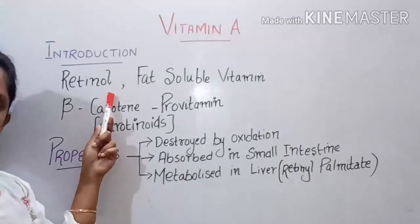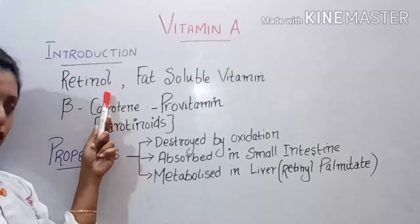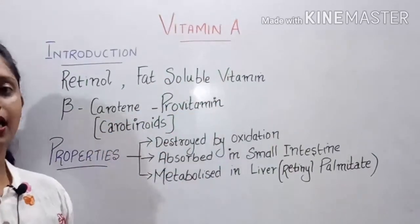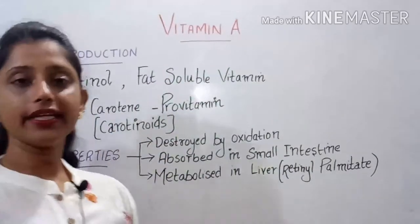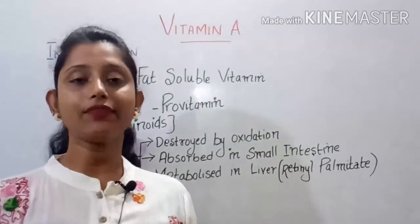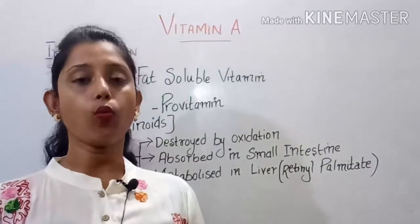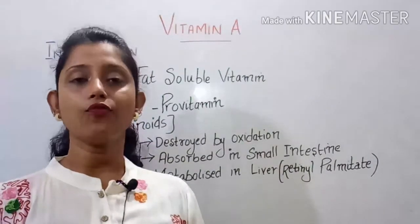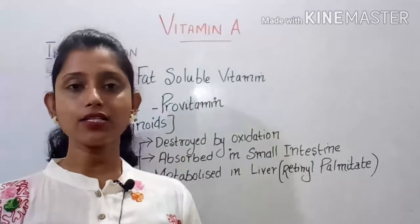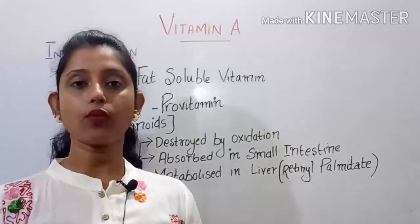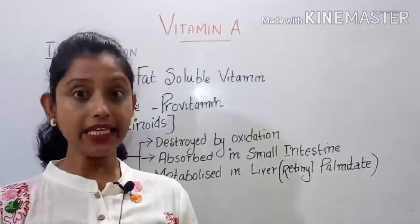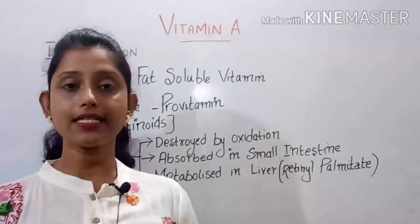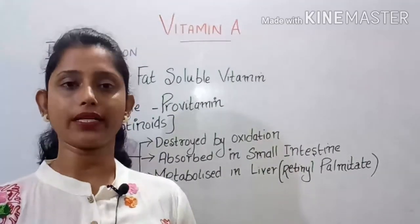Vitamin A is a type of fat-soluble vitamin. Vitamins are mainly divided into two: first is water-soluble vitamins and the other is fat-soluble vitamins. The fat-soluble vitamins are Vitamin A, Vitamin D, Vitamin E, and Vitamin K — these four vitamins are fat-soluble.